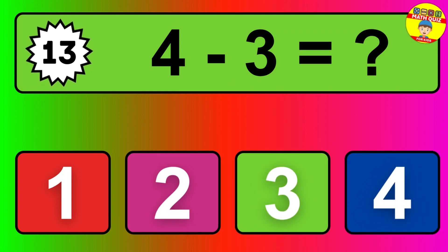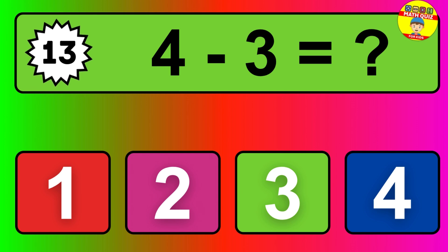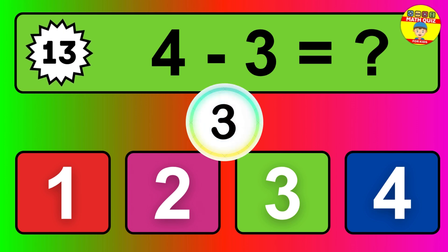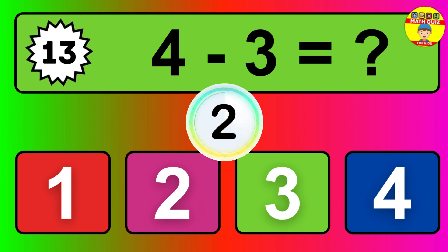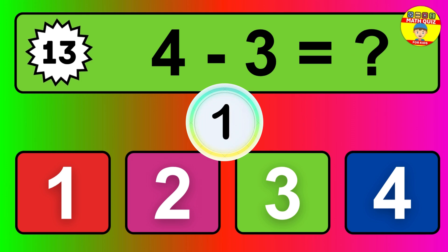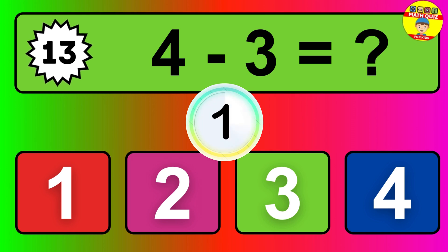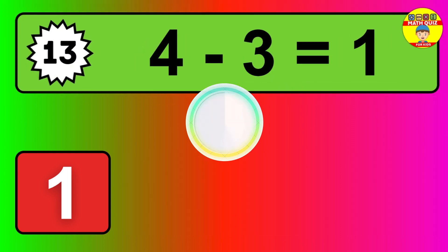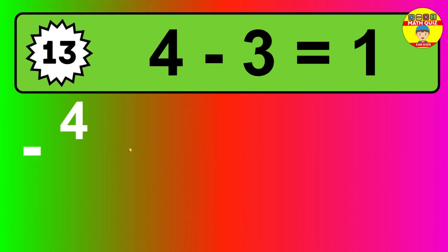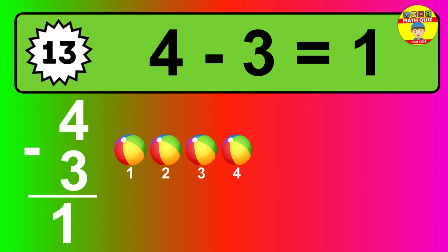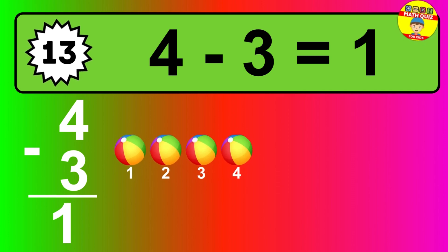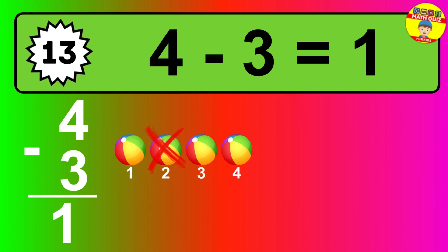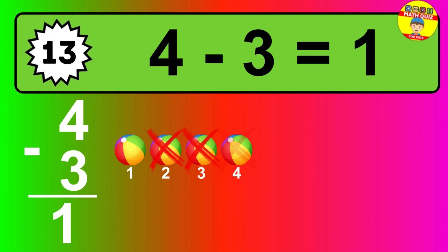Question 13. 4 minus 3 equals what? So the answer is 4 minus 3 is 1. Let's count it: 1.